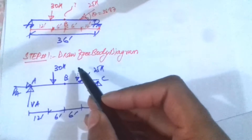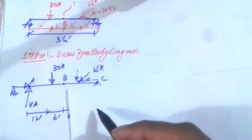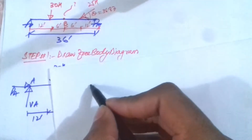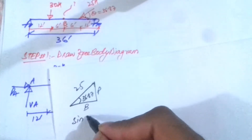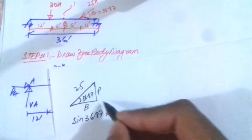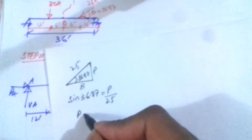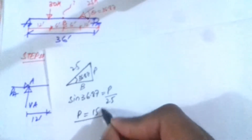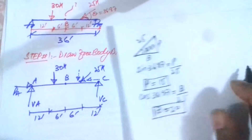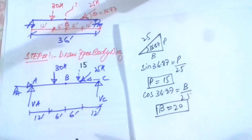First I need to resolve the 25 kip inclined force into its components using trigonometry. Drawing the triangle with angle 36.87 degrees and hypotenuse 25: sin(36.87) = P/25, so the vertical component P is 15 kips. Then cos(36.87) = P/25, giving the horizontal component P as 20 kips. So the vertical component is 15 kips and the horizontal component is 20 kips.